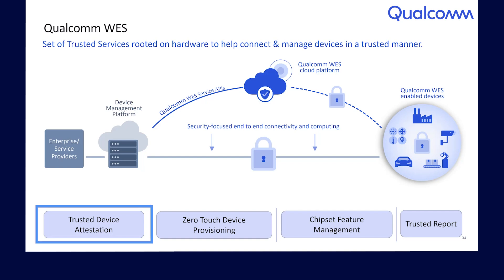Trusted Device Attestation provides an on-demand attestation service for chipset-based identity, device authenticity, and connection integrity. It generates a cryptographically signed and encrypted device attestation report that describes the security state of the device and its software. This attestation report consists of the device's unique identifier, device state information, and optional customer data, which is useful for risk engines and other similar applications.